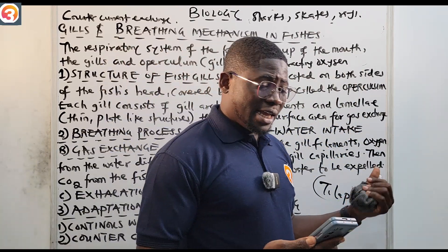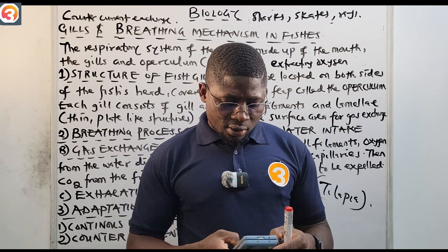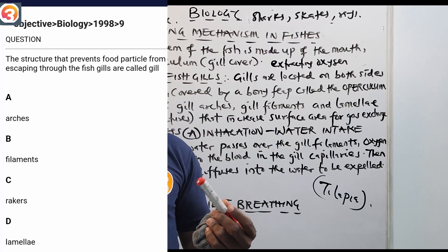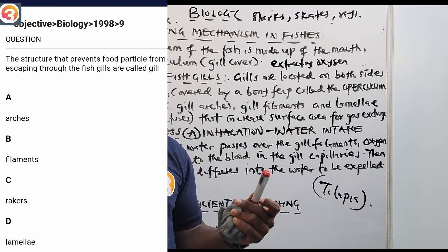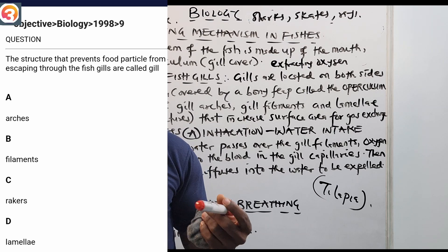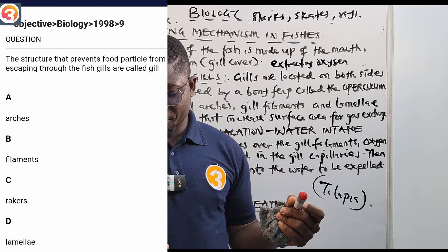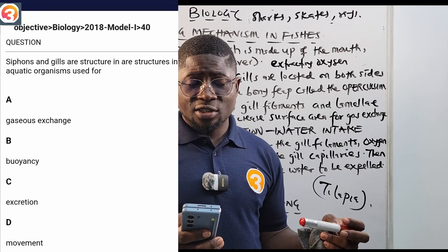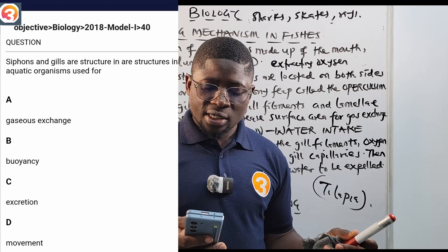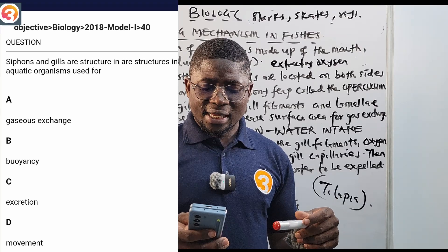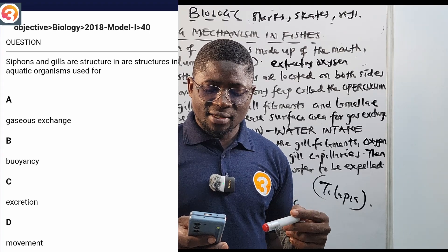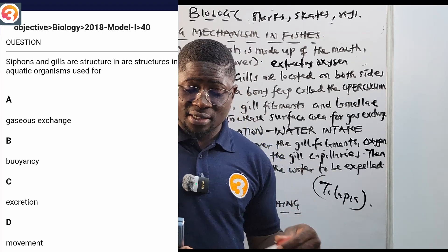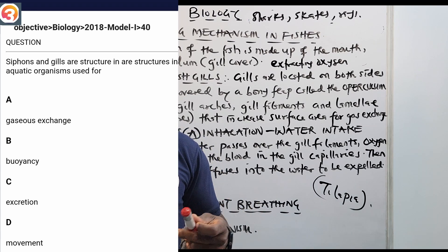Now let us go to the O3 School JAMB app and answer some questions. First, 1998 question nine: 'The structure that prevents food particles from escaping from the fish gills are called gill —' (A) arches, (B) filaments, (C) rakers, (D) laminae. The correct answer is the gill rakers. Also, 2018 number 40: 'Siphons and gills are structures in aquatic organisms used for —' the correct answer is option A, gaseous exchange.